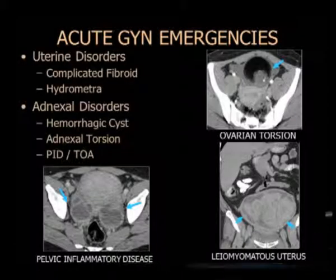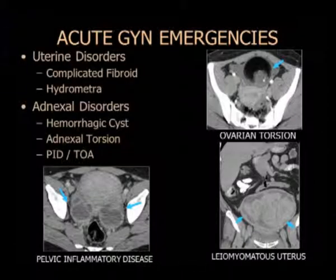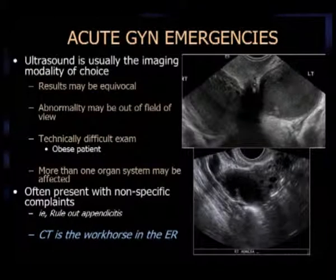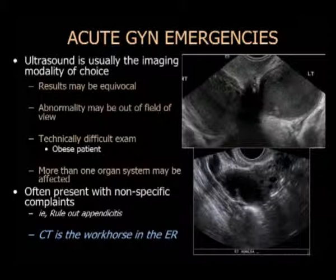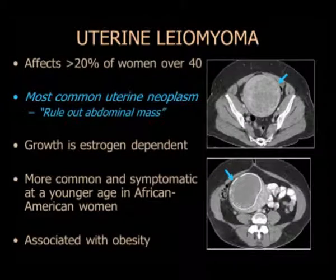Ultrasound is still the imaging modality of choice in these patients. We know that many times it's equivocal — sometimes the abnormality is outside the field of view, and the obese patient can be a very technically difficult exam. Many times patients present with nonspecific pain, eventually showing PID. We've noticed that CT has become the workhorse, and we're capturing more and more gynecological pathology and acute findings with CT.